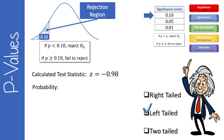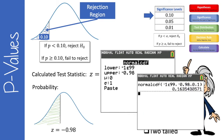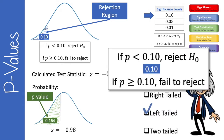This time our calculated test statistic is z = -0.98. The probability of getting a z-value of -0.98 or less — using the calculator with an upper bound of -0.98 — gives an area under the curve of 0.164. That is our p-value. Since 0.164 is greater than 0.10, we fail to reject the null.